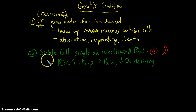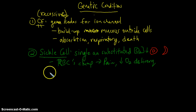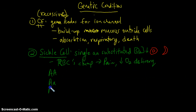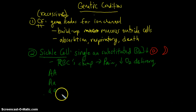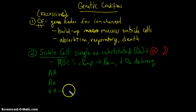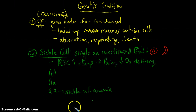Sickle cell disease, or sickle cell anemia as it's often called, is not necessarily a good thing to have. What's fascinating is that there are differences in phenotype between individuals who are homozygous dominant, heterozygous, and homozygous recessive. It's individuals who are homozygous recessive who have full-blown sickle cell anemia and have the traits associated with the condition.